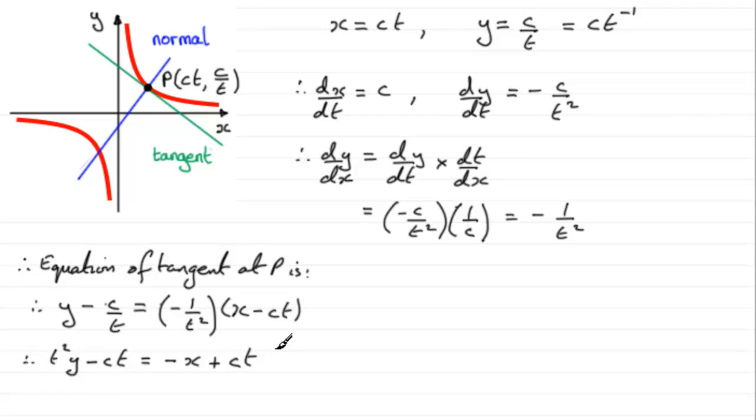I could rearrange this by adding x to both sides and subtracting ct from both sides. If I do that, I'm going to get x plus t squared y and then minus 2ct. And that will equal 0. So that gives us our general equation of the tangent when it's given in parametric form.